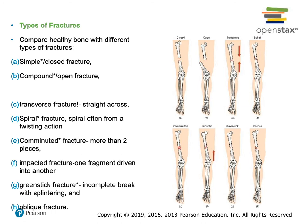A spiral fracture usually comes from a twisting action. If a child has a spiral fracture and goes to a children's hospital, it's automatic that the parents are investigated. It doesn't mean the parents are abusing the child, but the twisting action of being too rough on a child can cause a spiral fracture, so it needs to be investigated.